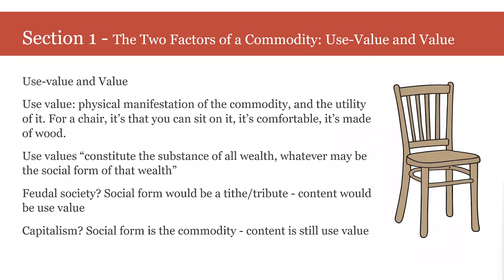Section one. Marx starts with the section entitled 'The Two Factors of the Commodity: Use Value and Value.' Use value is relatively simple. He says a commodity such as iron, corn, or a diamond, insofar as it is a material thing, is a use value—something useful. So it's the physical manifestation of the commodity and the utility of it. For a chair, it's that you can sit on it, stand on it, it's comfortable. For a book, you can read it—it's made of paper, it burns well.